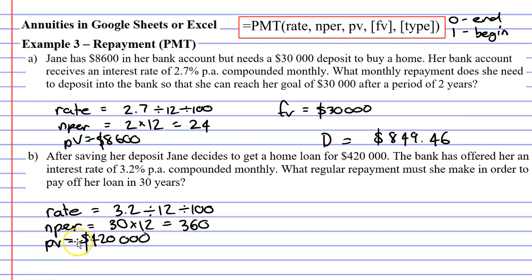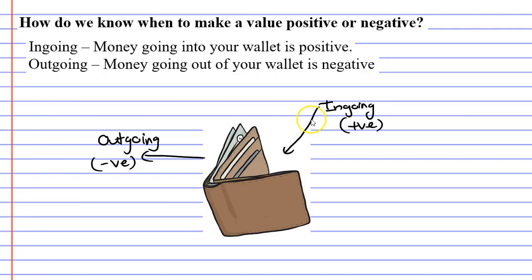Now, we need to talk about whether this is a negative amount or a positive amount — is it an ingoing or an outgoing? It's definitely not an outgoing. Jane is not taking $420,000 out of her pocket. So is it an ingoing? It's not really money that's going into her wallet.